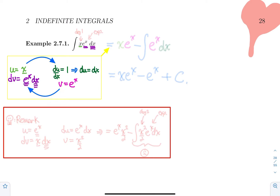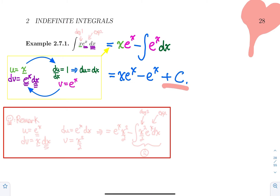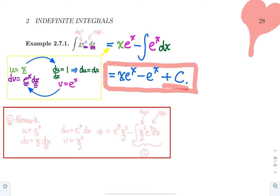Applying the formula, the integral of x·eˣ equals uv minus the integral of v du, which is x·eˣ minus the integral of eˣ·dx. Now we have a new integral: the integral of eˣ is simply eˣ again. So the final answer is x·eˣ minus eˣ plus C.